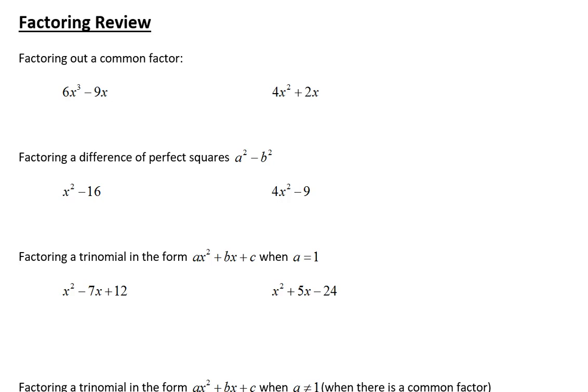This lesson is a factoring review of all the types of factoring we've learned so far. We're starting with factoring out a common factor because we remember that's the first step in any factoring problem: to look and see if the two things have any factors in common. Do 6x³ and 9x have any factors in common? Yes, they have a 3x in common. So we factor out the 3x and we divide both of those pieces by 3x. 6x³ divided by 3x is 2x², and 9x divided by 3x is 3.